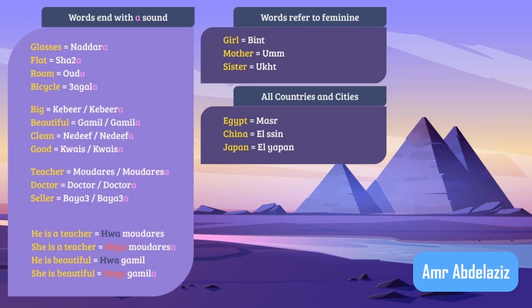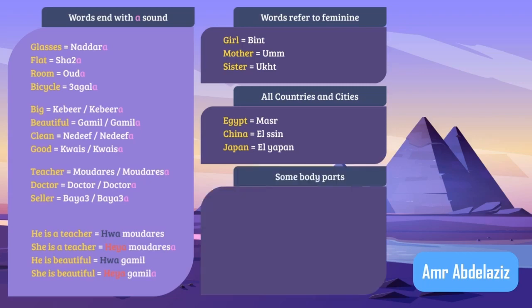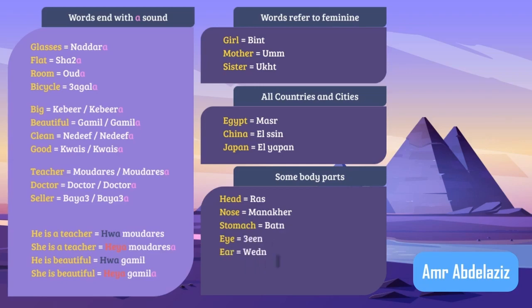The fourth case of feminine: some body parts are feminine, even though they don't end with a sound. For example: head — 'raas', nose — 'manakhir', stomach, eye — 'ayin', ear — 'widn', hand — 'eid', leg — 'regl'.